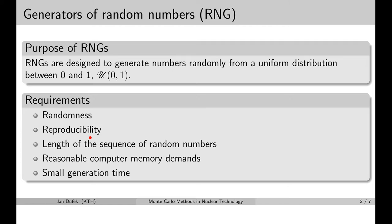The other requirement is reproducibility. That means we need the random number generator to be able to replicate the sequence of random numbers. This requirement is not needed for the simulations themselves — it is simply needed for debugging of Monte Carlo codes. When a specific error shows up during a simulation, we need to track down the bug in the source code, and if we couldn't replicate the sequence, the error might not show up again. So this requirement is primarily to enable debugging of Monte Carlo codes.